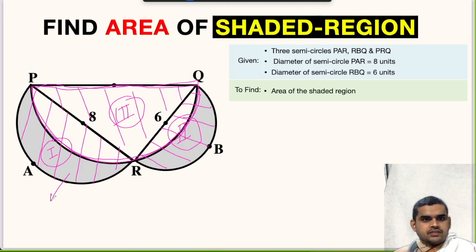The area of semicircle PAR will be πr² divided by 2. If the diameter is 8, radius is 4. So 4² by 2, this will be 16π divided by 2. This comes to 8π square units.